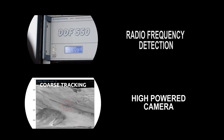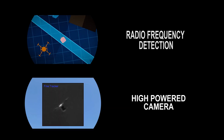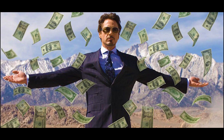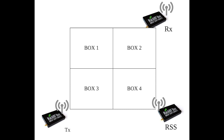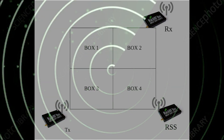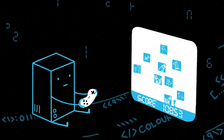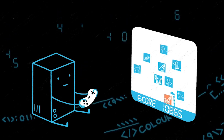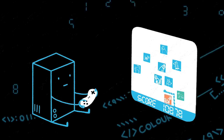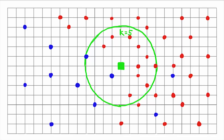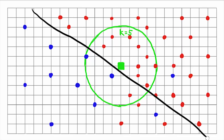Radio frequency detection and high-powered cameras are just too expensive. Using multiple HackRFs to create a radar that is cost-effective and easy to deploy. Machine learning algorithms such as K-Nearest Neighbor, a supervised ML model, are used in this research.